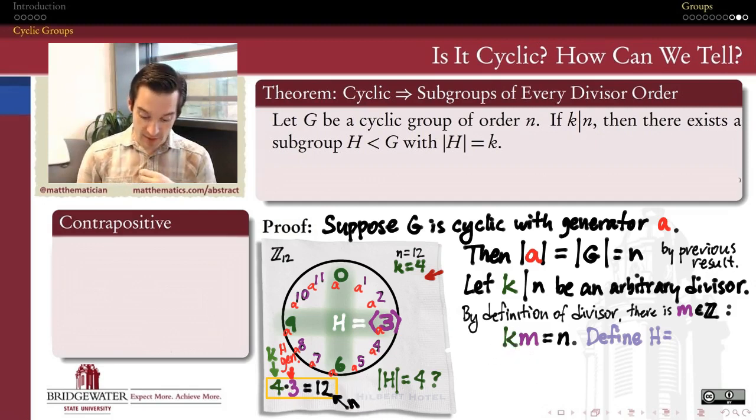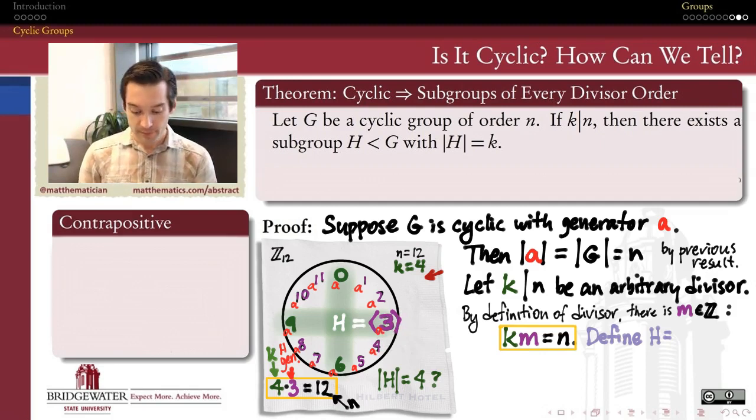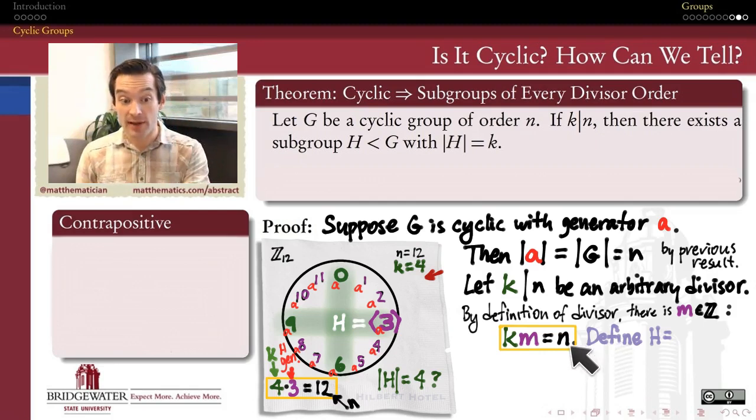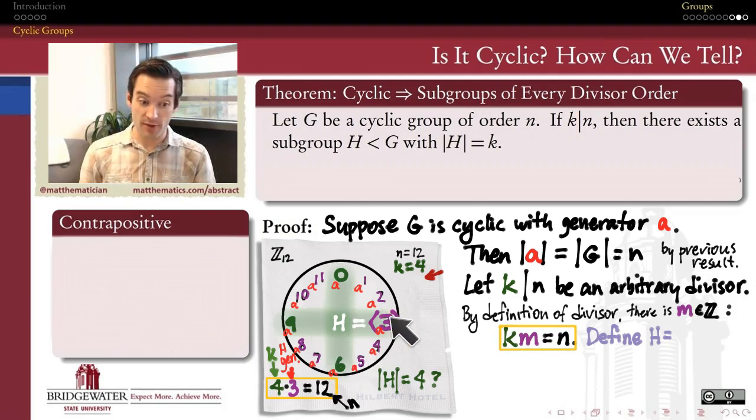This thing is the equation which tells us the reason why k is a divisor of n. It also gives us this cofactor m, which in our example on the napkin was a pretty important element to figuring out how to construct our subgroup. We're going to write what we call a constructive proof. It's a constructive proof because we're going to tell the reader exactly how to make the subgroup H. We're not just going to show that it exists, but we're going to show specifically how it can be constructed.